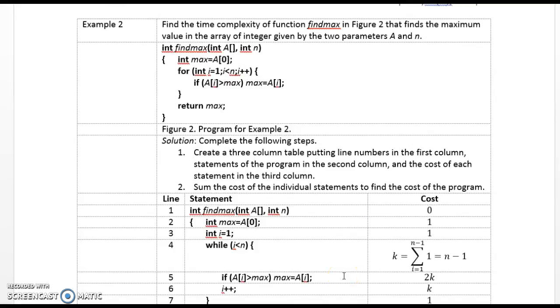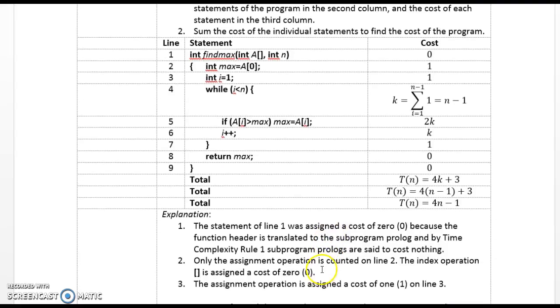Example 2. Find the time complexity of function findmax in figure 2 that finds the maximum value in the array of integers given by two parameters, a and n. So what we do is we assign an arbitrary value, a of 0 to max, and then we proceed to test each element to see if it's the maximum element. So in our time complexity table, the cost of calling findmax is 0, the cost of assigning local variable max the value in index position 0 is 1, just one assignment.